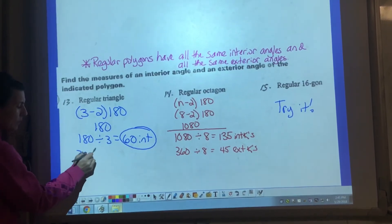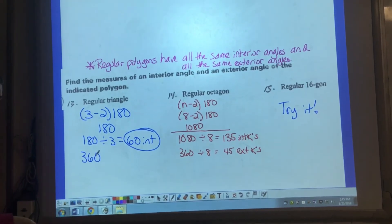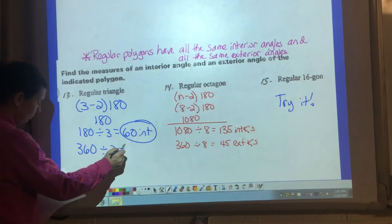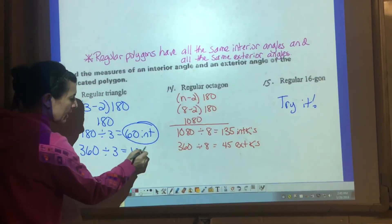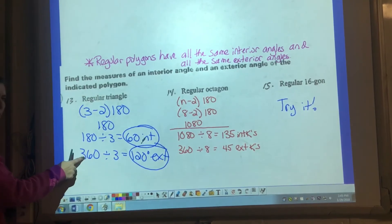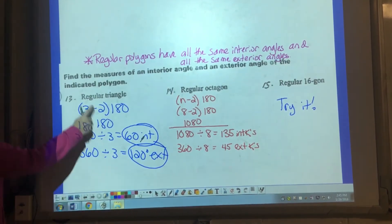Exterior angles add up to 360 and we know there's three angles there also. So we can divide 360 by 3 and we end up with 120 as our exterior angles. So we know the sum is 360. We know there's three and they're all the same because they're regular.